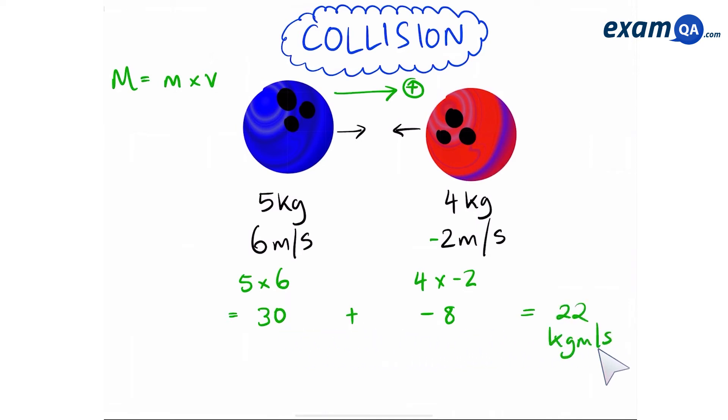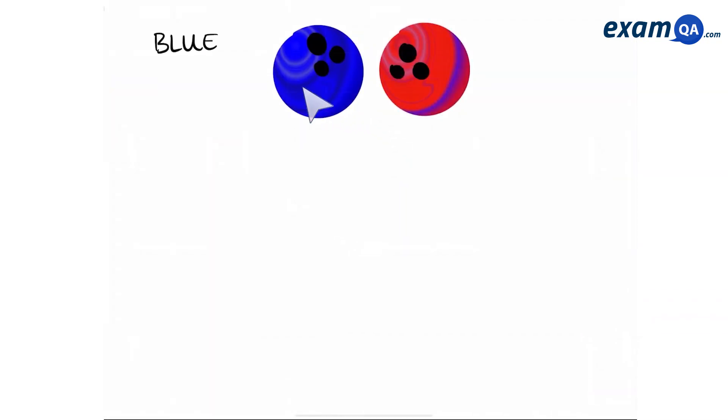To quickly summarize that one more time: the blue ball has a mass of 5 kilograms and a velocity of 6 meters per second. Since it's moving towards the right, it will be a positive number. So that gives us a total momentum of 30. The red ball has a mass of 4 kilograms and a velocity of minus 2 meters per second because it's moving in the opposite direction. We said anything that moves towards the right will keep us positive. Anything that moves towards the left will be negative. Therefore the total momentum of the red ball is minus 8.